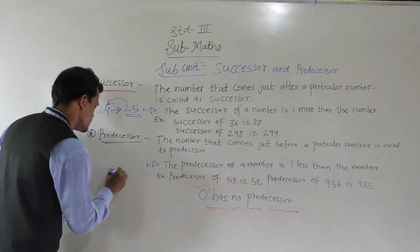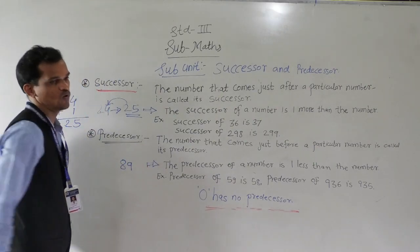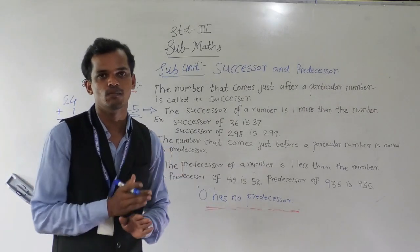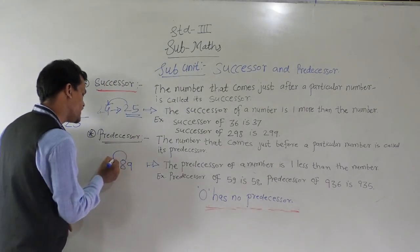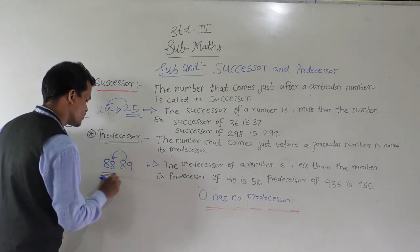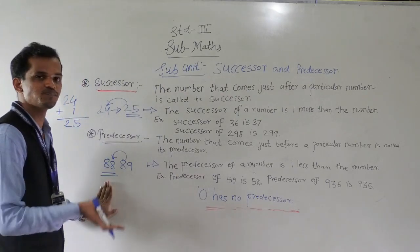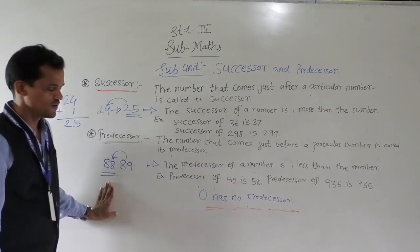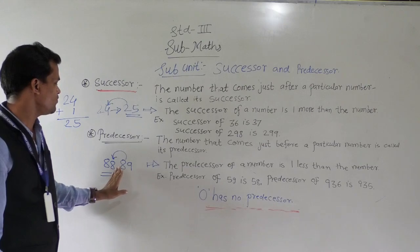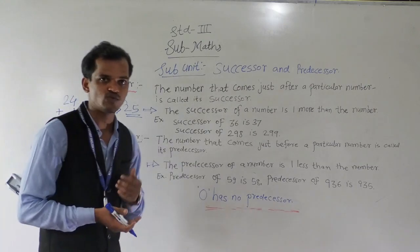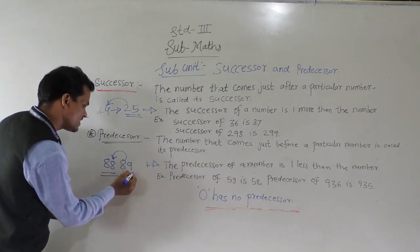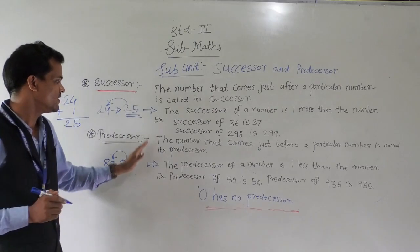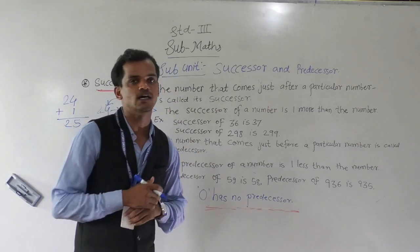Suppose one number is here: 89. Which is the predecessor — the just before number — of 89? Before 89, the number 88 comes. So 88 is the predecessor of 89. In other words, we can say 89 is the successor of 88. The predecessor of a number is 1 less than the number.